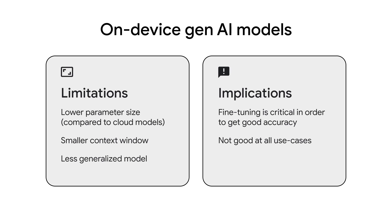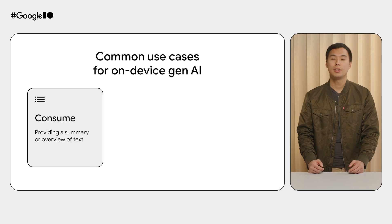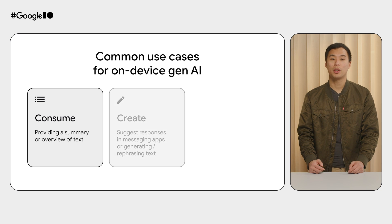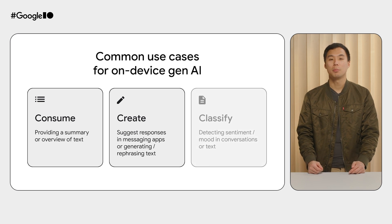So what are some good use cases for on-device GenAI? Most successful applications leverage the unique strengths of on-device inference. Some examples include assistance with content consumption, such as providing a summarization or overview of text; assistance with content creation, like suggesting or rephrasing responses in messaging apps to change the tone or style of a message; and simple classification of content, such as detecting sentiment in conversations or text.